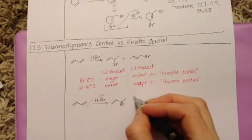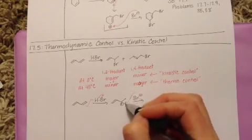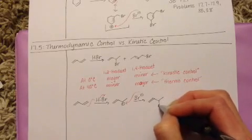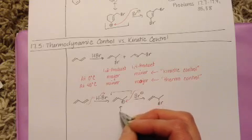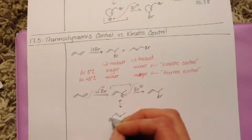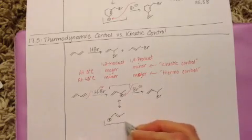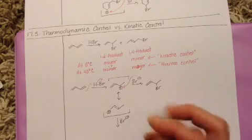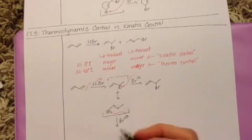And you know from the last section that the bromide ion will then attack the carbocation and we'll get this product right here. And you also know that we have the possibility of resonance, which puts the positive charge in a different position. And that resonant structure can also be attacked by bromide to give us the other product.